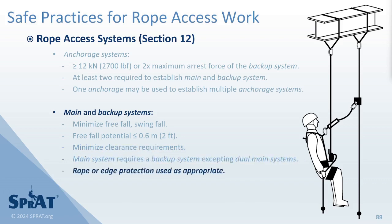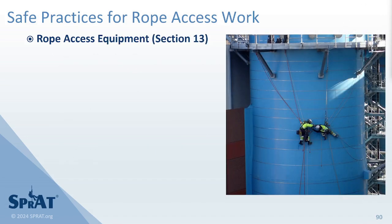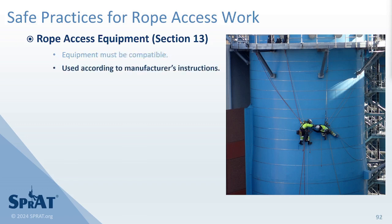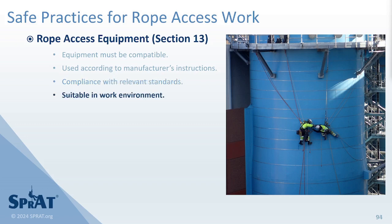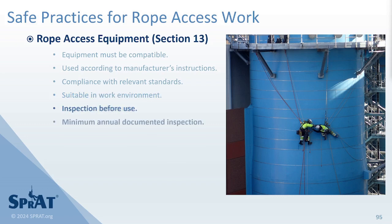Rope or edge protection should be used as appropriate to protect rope access systems and property. Rope access equipment used in rope access systems must be compatible. Equipment should be used in accordance with manufacturer's instructions and recommendations, and should comply with relevant standards. Equipment must be suitable and functional in the work environment and must be inspected for damage and function prior to use. Documented inspections of equipment must be conducted at a minimum on an annual basis.